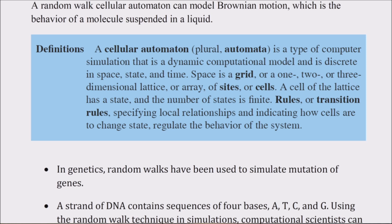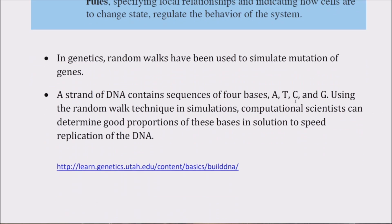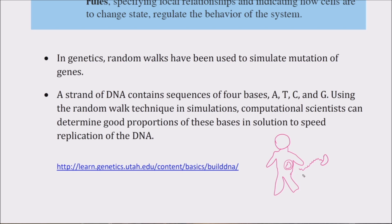That is one idea of random walk. There's another example about DNA sequencing. Why is it important? For instance, if you need a transplant — say a kidney — in order to receive a kidney from someone else, you have to match certain things like blood type and other factors.